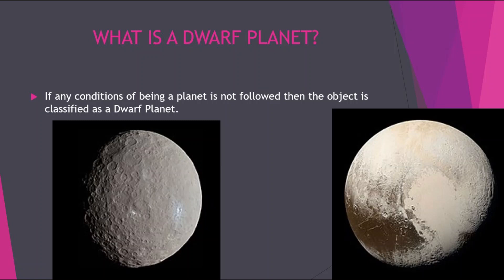— but the third condition, 'has cleared the neighborhood around its orbit,' which was the latest update made in 2006, was not followed by Pluto and the remaining dwarf planets. That's why Pluto was classified as a dwarf planet.